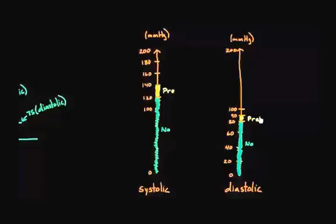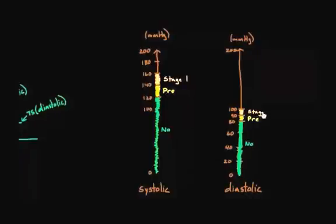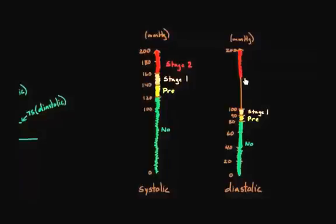If you're above 140 for systolic, you have hypertension. The zone from 140 to 160 in particular is considered stage one hypertension. Between 90 and 100 for diastolic would also be stage one. If you have something above 160 for your systolic blood pressure — even higher than 200 — that would be stage two. Similarly, a diastolic well above 100 would be stage two hypertension. The higher you go, the higher your stage number.